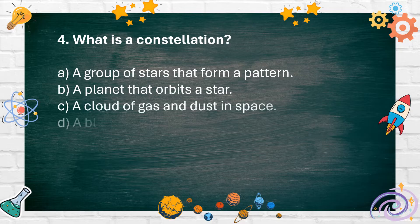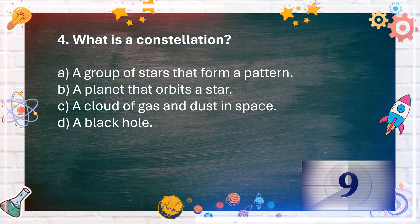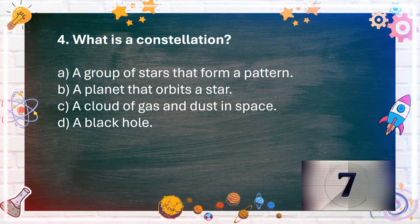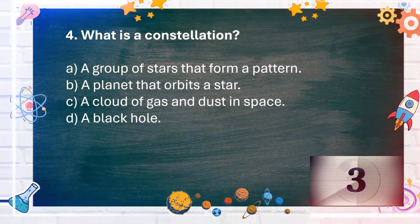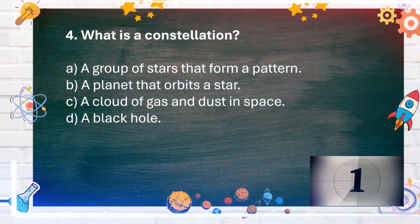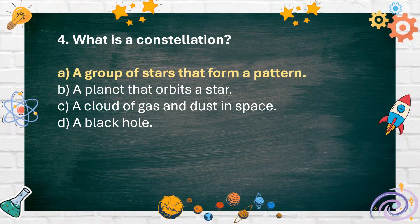Number 4: What is a constellation? C. A cloud of gas and dust in space, D. A black hole. The answer is A. A group of stars that form a pattern.